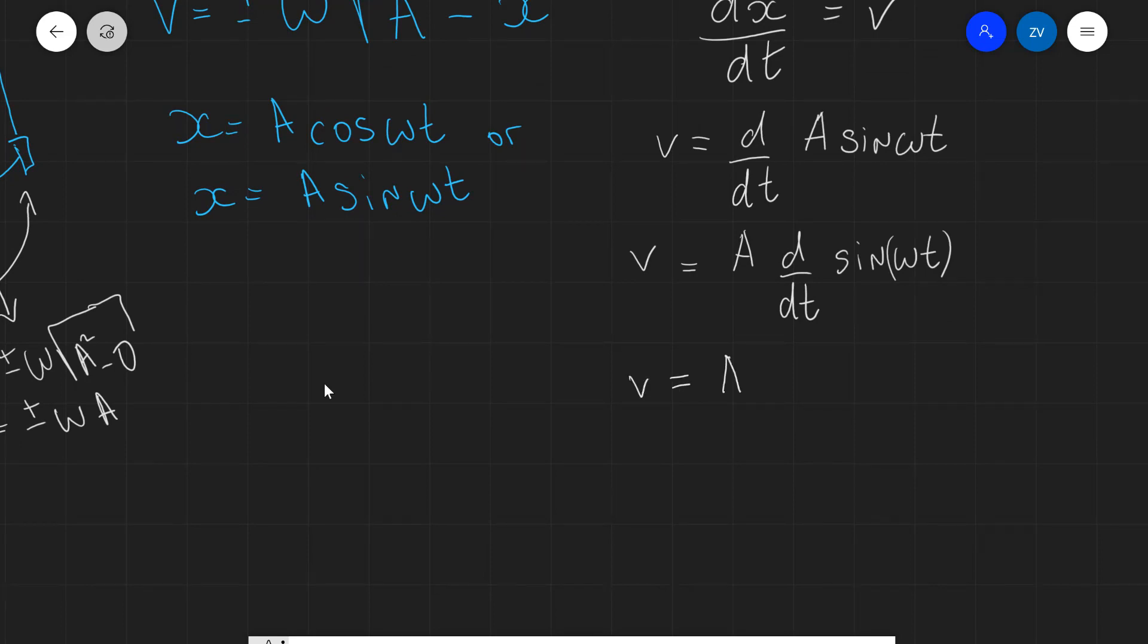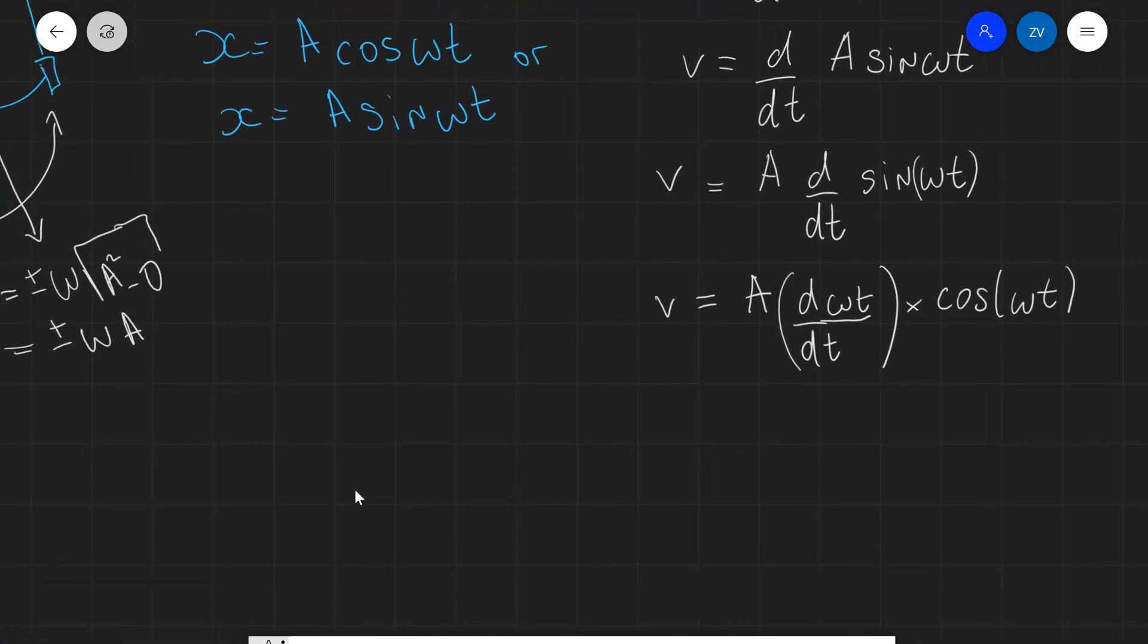So, v will now be equal to A times the derivative of the function inside, which is omega t. So, I'm going to write this in as many steps as possible. So, this will be equal to d by dt of omega t, like so. I'm going to put in some brackets even, multiplied by the derivative of the outside function, which is sine of omega t. Actually, let's just write it down as the derivative being the cosine omega t, because remember, the derivative of sine is cos. Okay, well, the first derivative is actually pretty straightforward. So, our velocity is going to equal to A. And if I differentiate omega t with respect to t, all I'm going to get is omega. So, I'm going to have the amplitude multiplied by omega multiplied by cosine omega t.